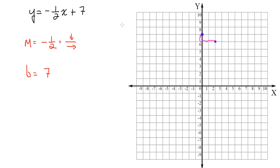I'll do this a few times. You don't have to draw the squiggly lines I'm drawing — I'm just doing this so you can visualize me counting out the steps from the slope. Down one step, to the right two. Down one step, to the right two. Now I take my straight edge, line it up with the points, and draw my line. Remember to extend the line all the way.